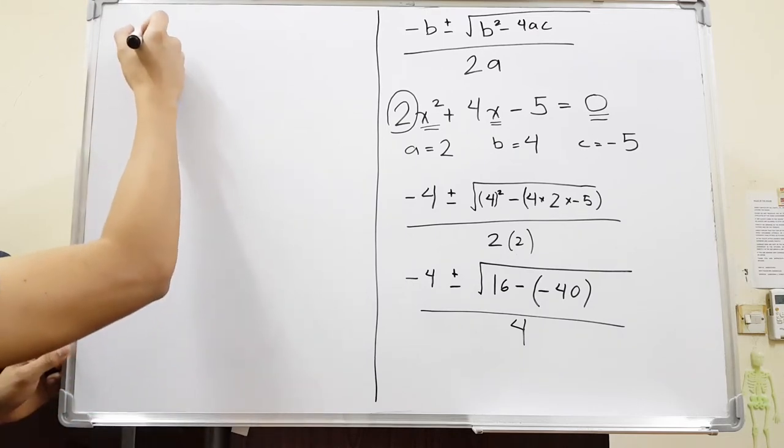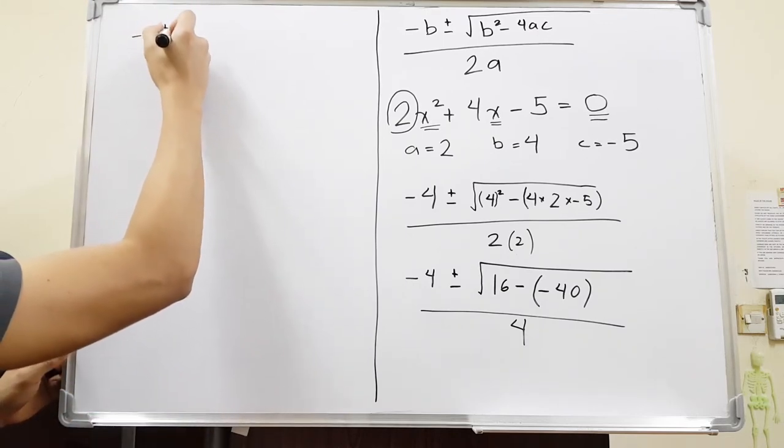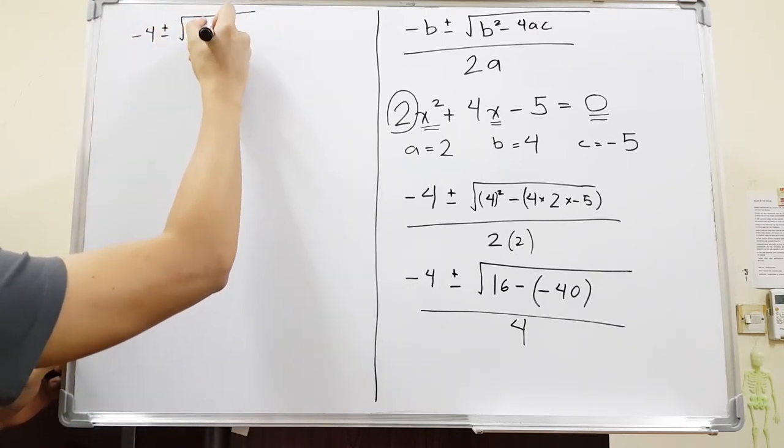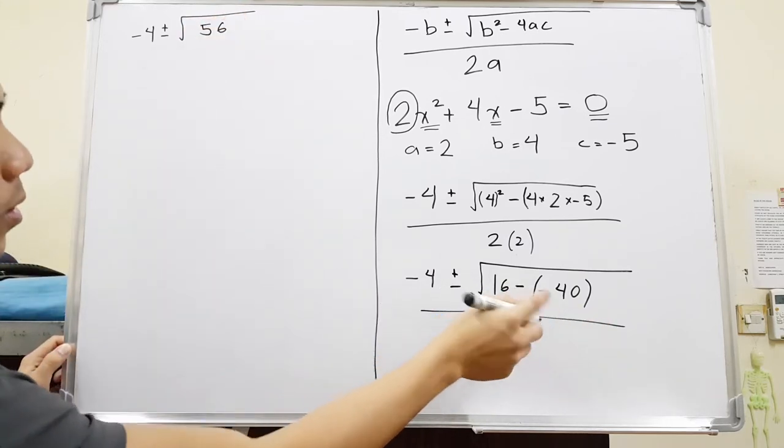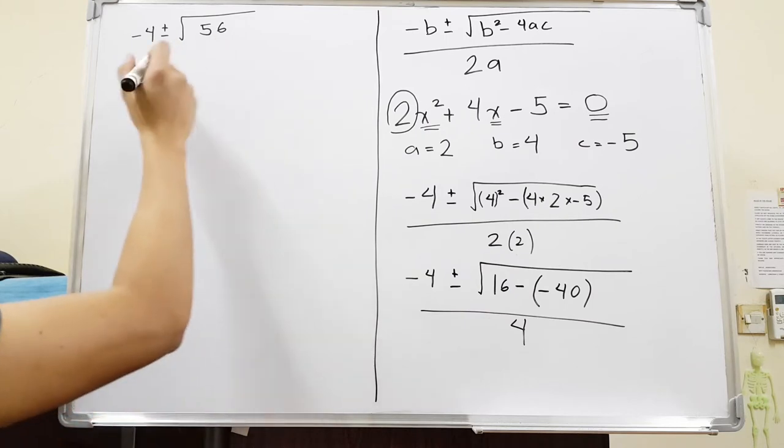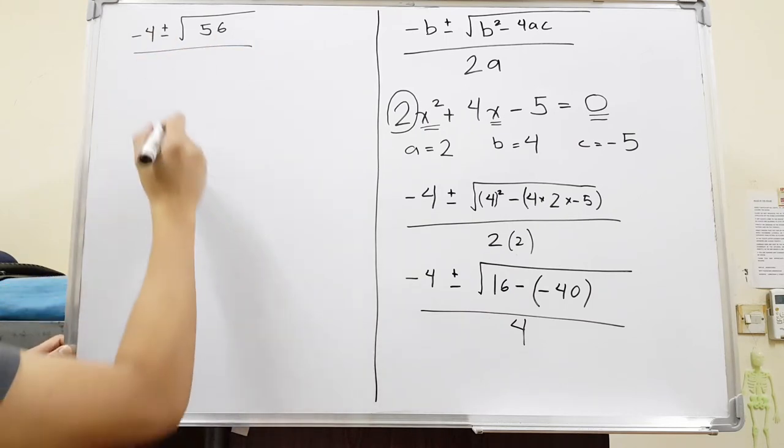Continuing, we have now negative 4 plus and minus square root of 56. So 16 minus minus 40, this one will turn into one big plus. So 56 all over 4.